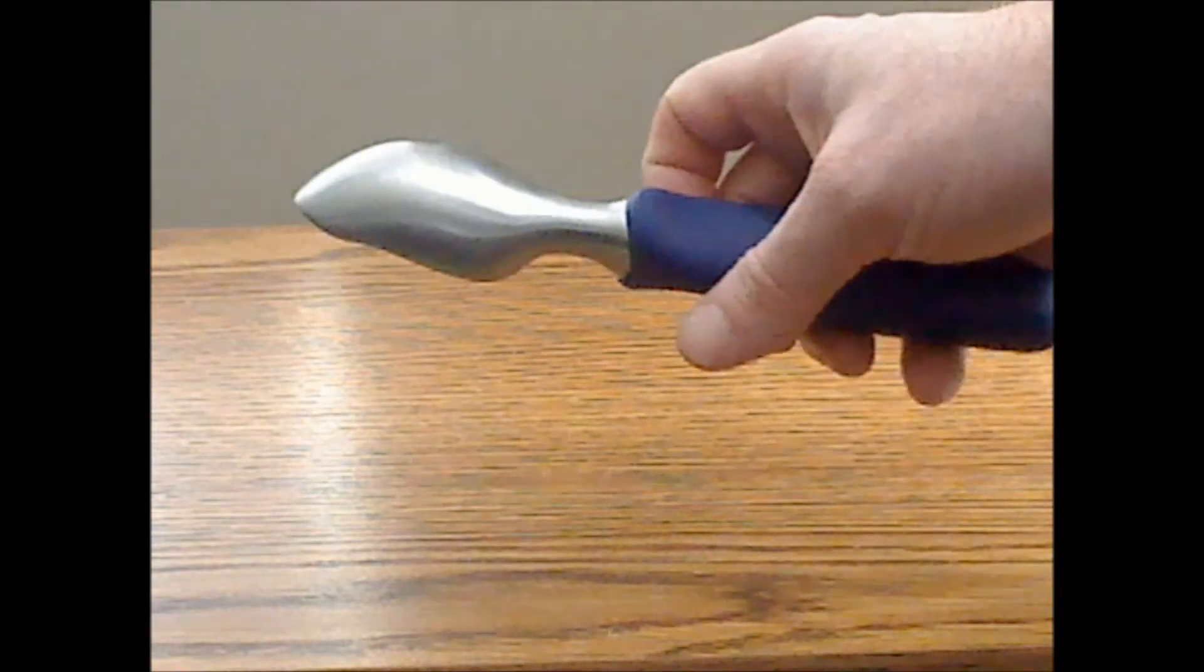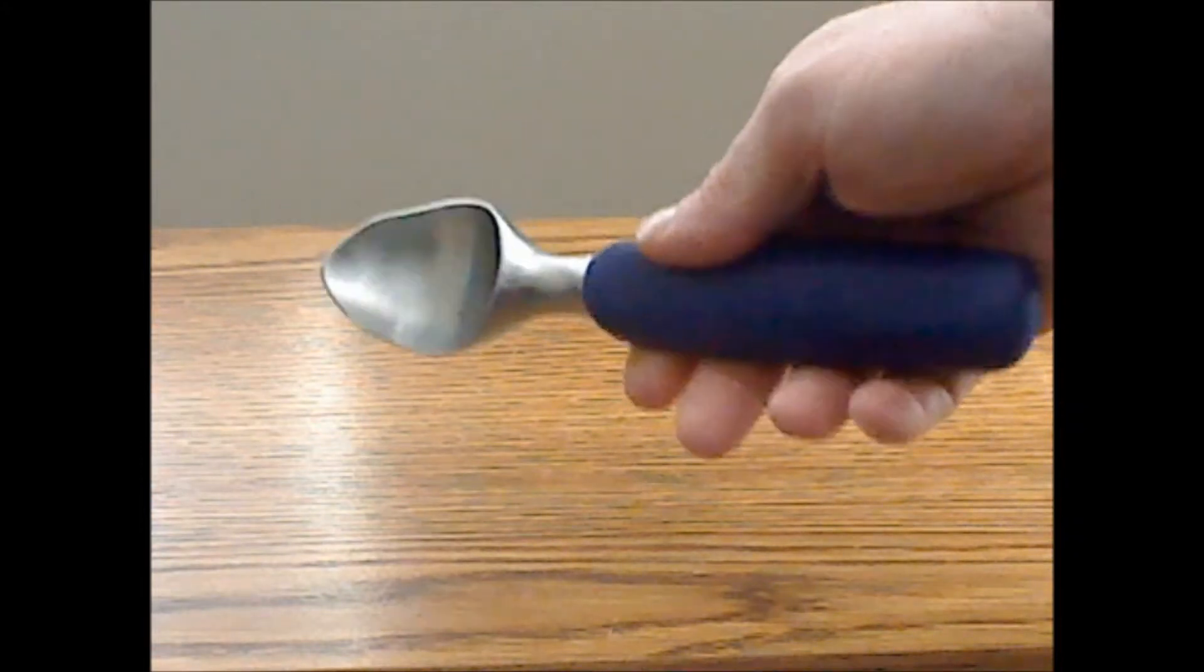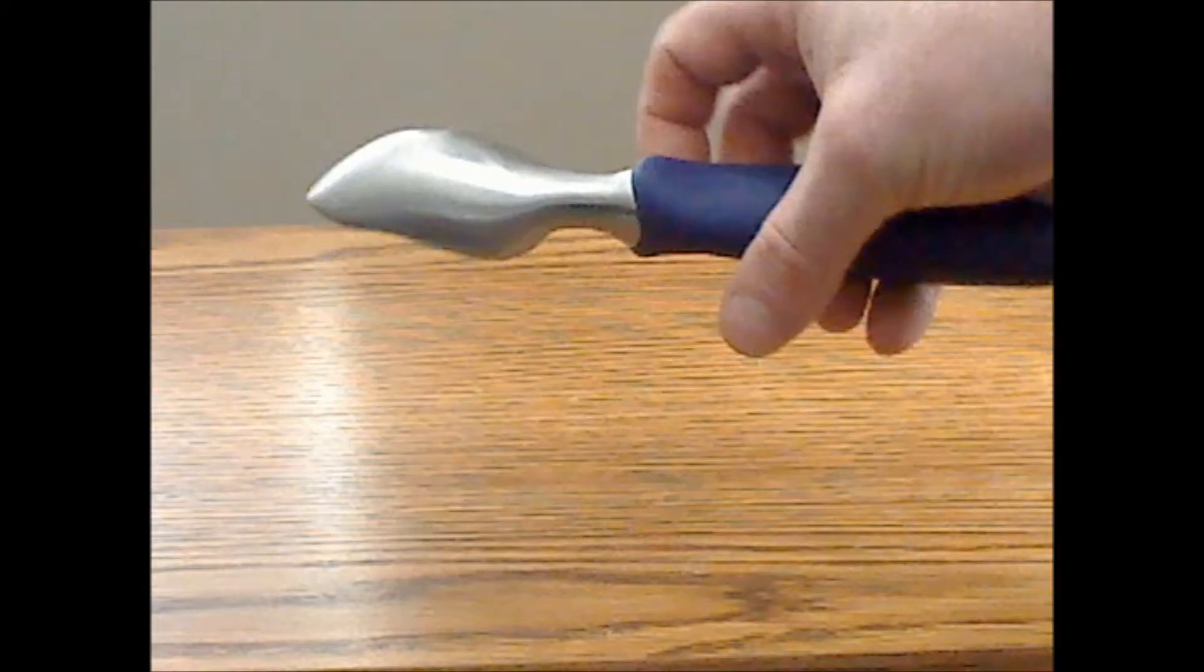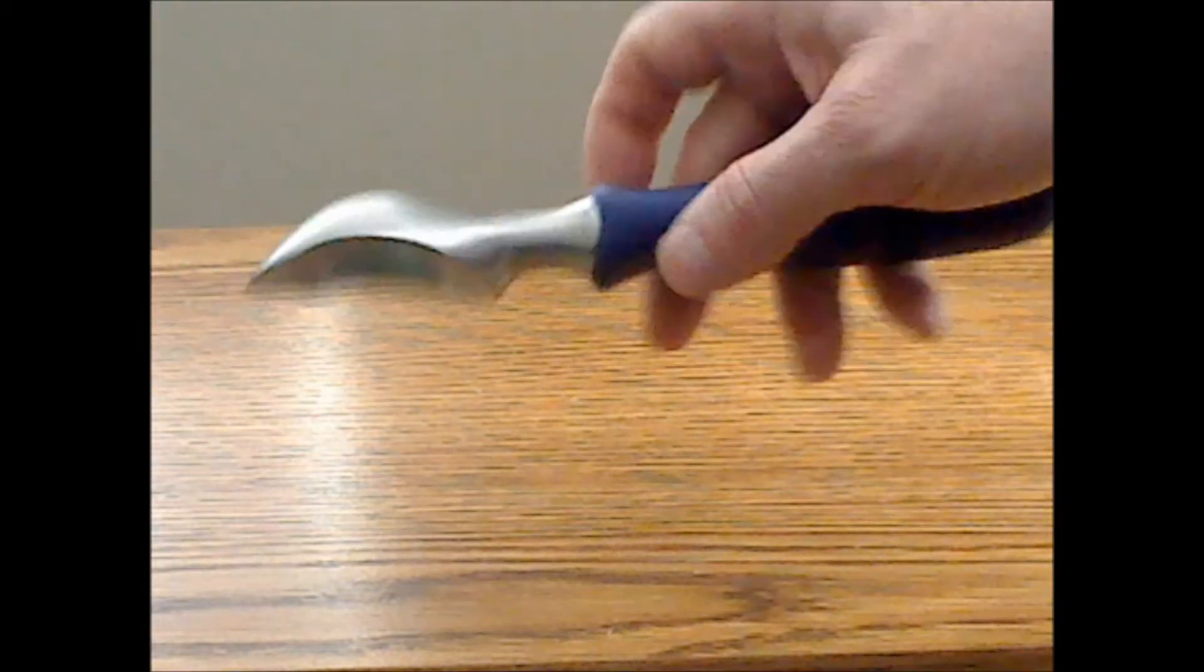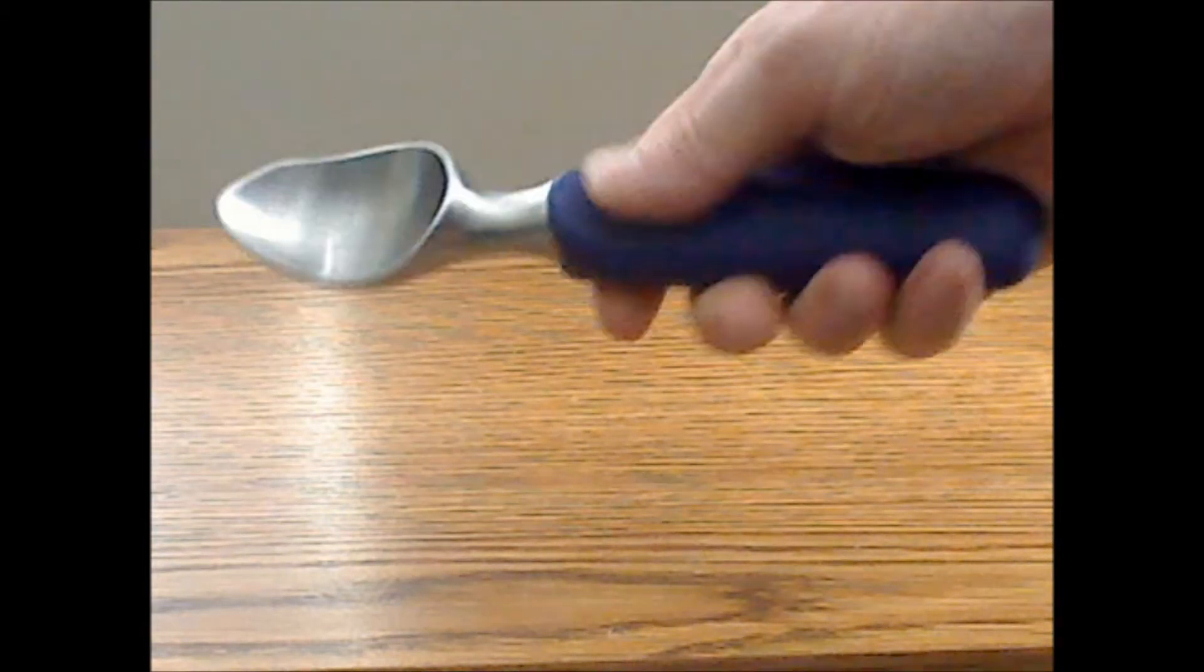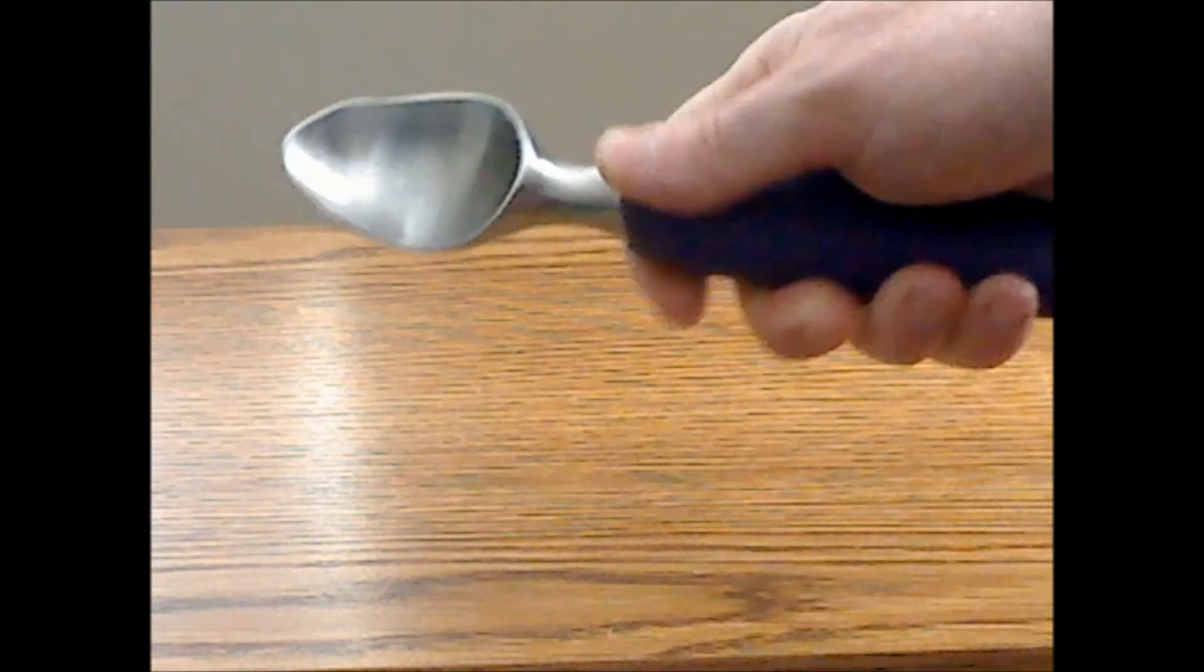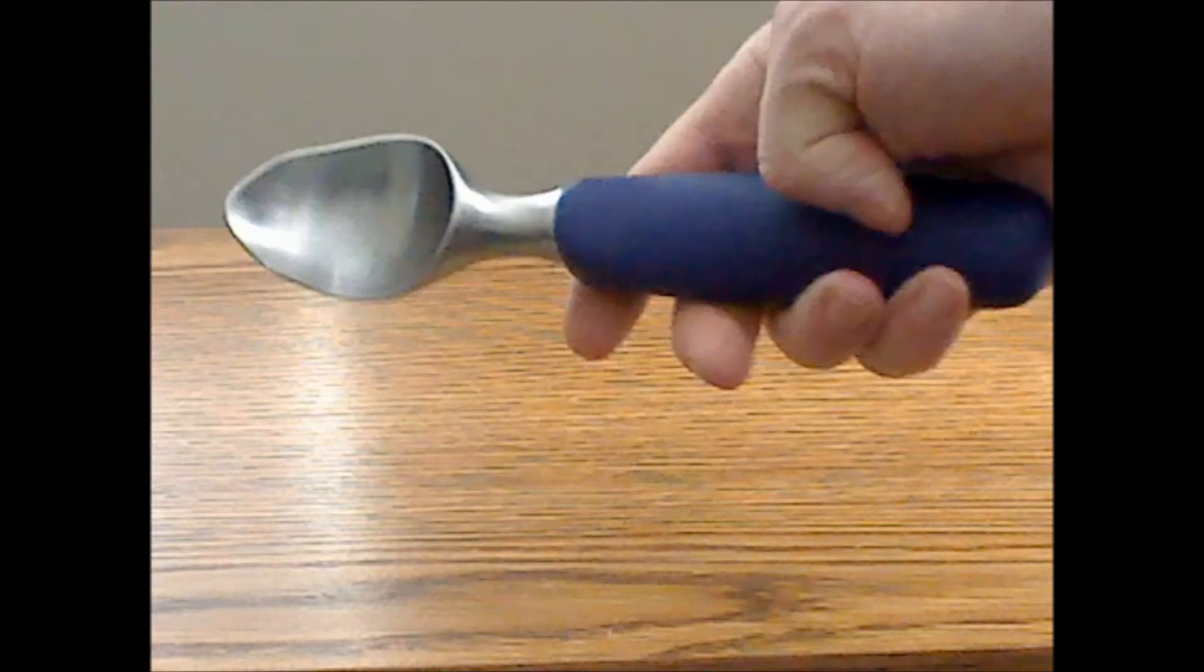This Sumo Scoop is one heavy duty, well-made kitchen utensil. It's solid stainless steel as you can see, and it's got a silicone grip that's comfortable and easy to hold surrounding the solid stainless steel handle.